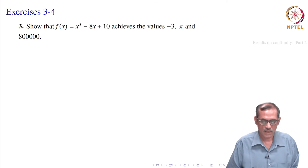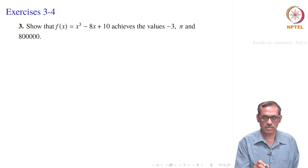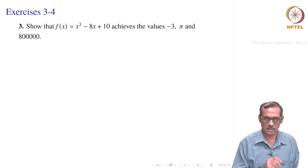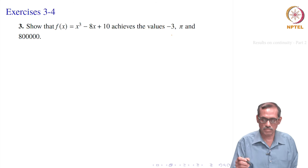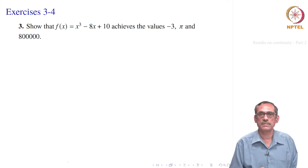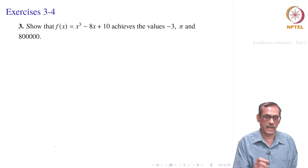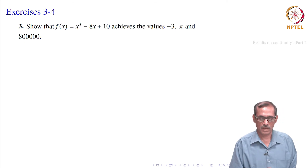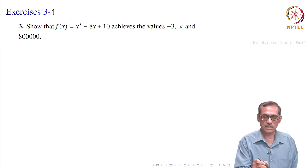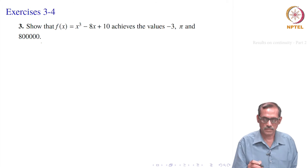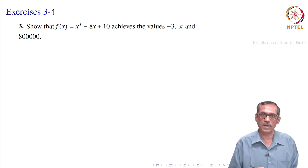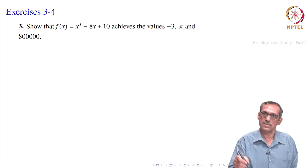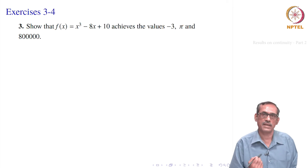Let us go to the next exercise. Show that f(x) = x³ − 8x + 10 achieves the values −3, π, and 800000. Achieves the values means there is a point a such that f(a) = −3, a point b such that f(b) = π, and a point c such that f(c) = 800000. It is a polynomial; since it is odd degree, as x → −∞ the function goes to −∞, and as x → +∞ it goes to +∞. So its range is all of ℝ and therefore −3, π, and 800000 should all be achieved.